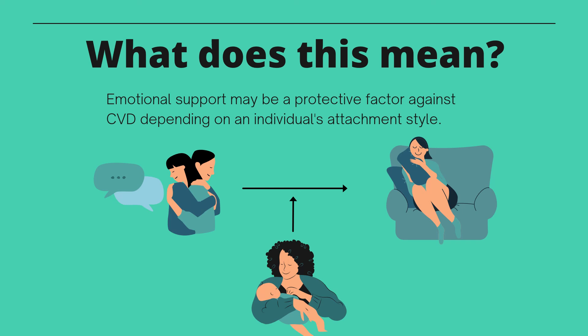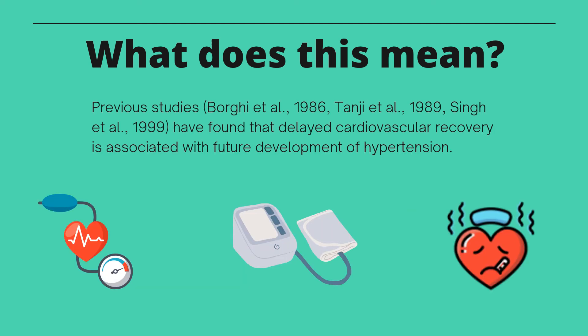In short, the results show that emotional support may be a protective factor against cardiovascular disease depending on an individual's attachment style. The relationship between cardiovascular recovery and emotional support differs across attachment styles. This finding aligns with research on psychosocial mechanisms underlying cardiovascular reactivity, suggesting it is plausible they also relate to cardiovascular recovery. Notably, attachment was not a significant moderator for heart rate recovery. The study found that attachment and social support are important factors affecting blood pressure recovery, which is conceptually sound as delayed cardiovascular recovery is associated with future development of hypertension.